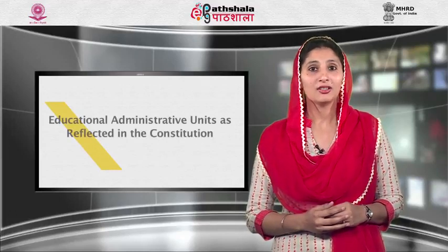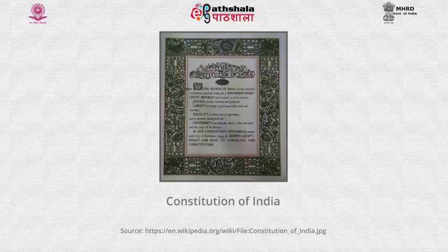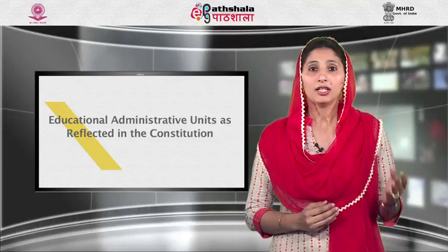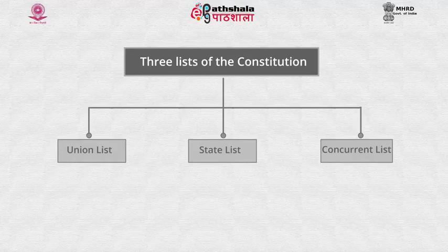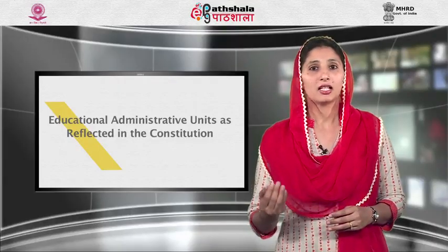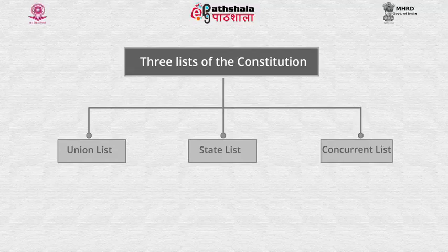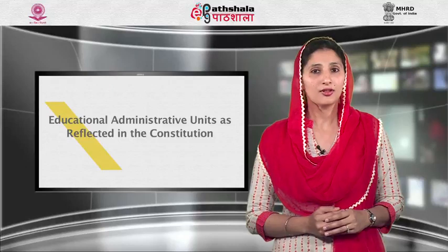Let us have a look at the educational administrative units as reflected in the Constitution. The Constitution of a country, which is the basic document and a source of legislation, has provided a large number of clauses and articles which have a direct or indirect bearing on education and its administration at various levels. In India, there are three units of educational administration: the first is the union or central government, responsible for certain specific provisions of education under special circumstances; the second is the state government, responsible for the entire system of education in the state; and the third are local administrative units, which provide education only up to primary stage.